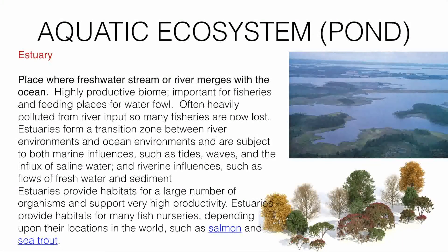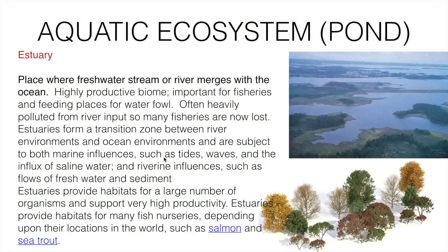An example of an aquatic ecosystem is the estuary — the place where a freshwater stream or river merges with the ocean. It is a highly productive biome, important for fisheries and as a feeding place for waterfowl, though often heavily polluted from river input. Estuaries form a transition zone between river and ocean environments, subject to tides, waves, saline influx, and freshwater flows, and provide habitat and nurseries for many fish species such as salmon.